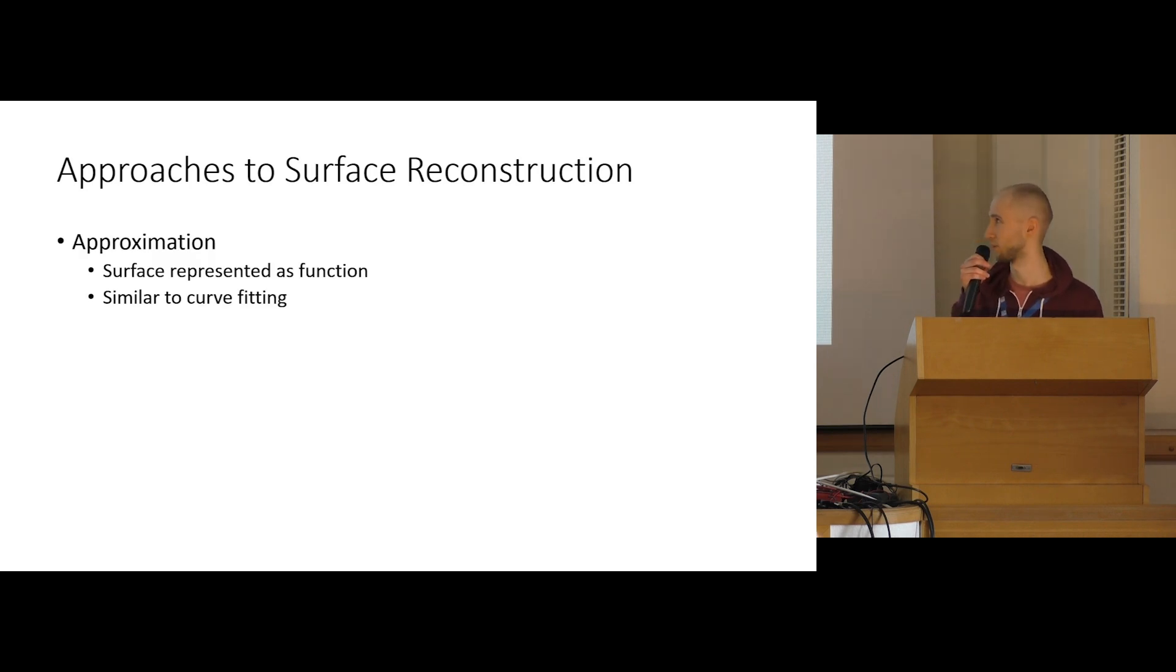There are two basic approaches for this. First one being approximation approaches, where, similarly to curve fitting in 2D, you represent the surface as a function and try to fit this function to the points. The second one is interpolation approaches, where you usually interpret the points as nodes of a graph, like vertices of a graph, and then try to extract the faces of the graph. You try to filter the faces of the graph so that only the actual surface of the object remains. One often used graph for this is the Delaunay triangulation.